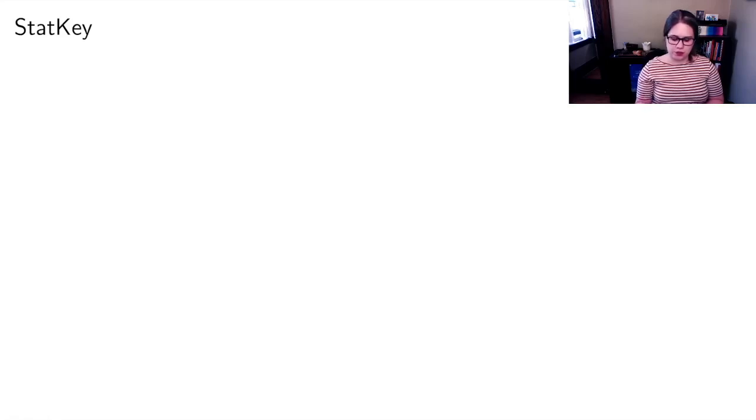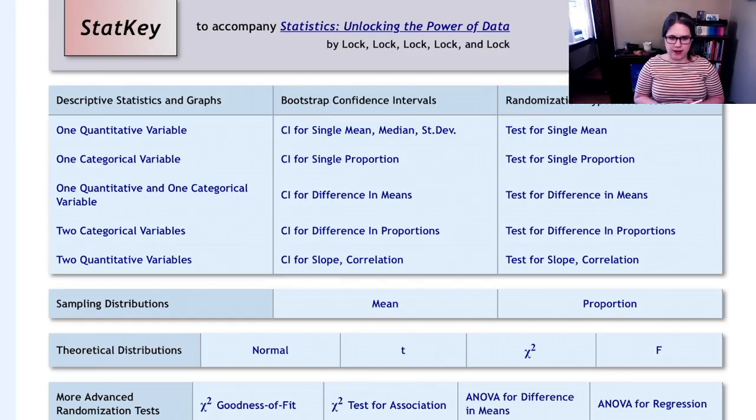StatKey has the ability to do this too, so I'm going to swap over there. Here I am on StatKey and we're now going to be looking at the column on the right hand side that says randomization hypothesis tests.